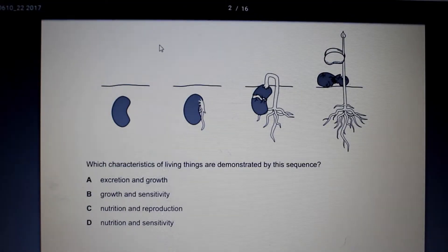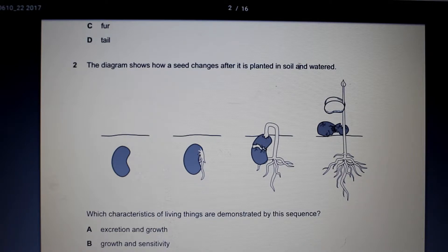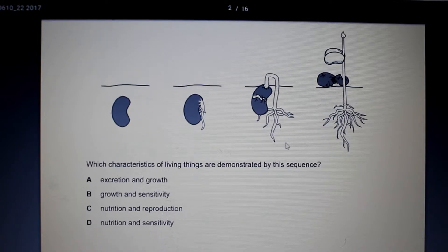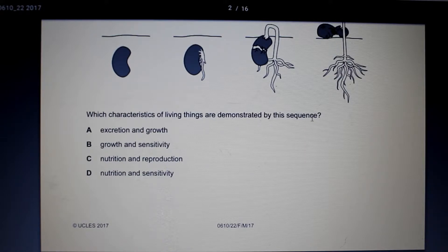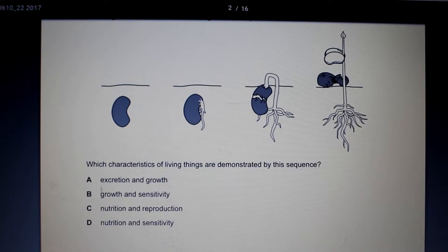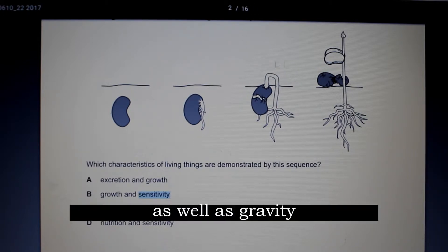Here we have a diagram which shows us how the seed changes after it's planted in soil and then watered. What characteristics of living things are demonstrated in this sequence of events? Well, we can see that growth will definitely be one of the characteristics. Thus we can take a look at the two that have growth in them. And then we can rule out excretion because the bean is not excreting anything or at least not anything that we can see at this stage. But it is displaying sensitivity because the stalk is growing upwards and the roots growing down. So it's showing sensitivity to an obvious light source.